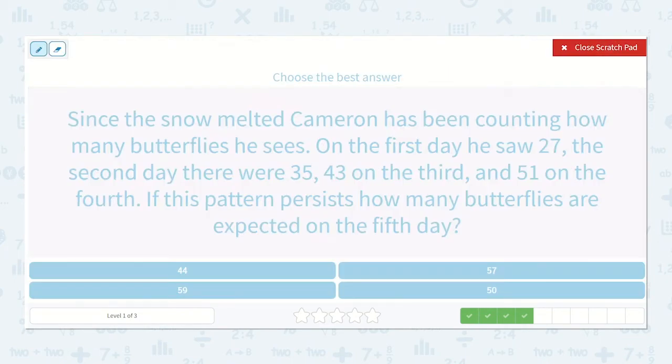Since the snow melted, Cameron has been counting how many butterflies he sees. On the first day, he saw 27. On the second day, there were 35. 43 on the third, and 51 on the fourth. If this pattern persists, how many butterflies are expected on the fifth day? Let's see. 27, 35, 43, and 51.